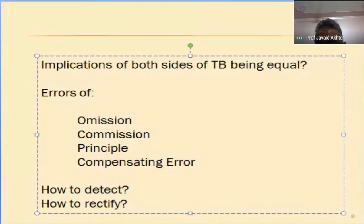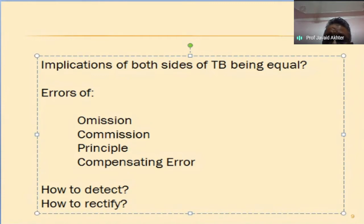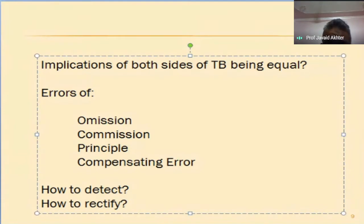We rectify by reversing the entry. We will not cross it out with a pen — we will make a reverse entry. The reverse entry would be: cash account debit to bank account. Something which was wrongly debited will be credited, and something wrongly credited will be debited. This is how a reverse entry is made — this is one example of rectification of error.